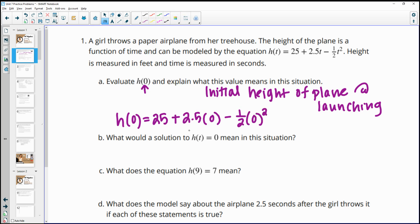And then anytime we multiply something by zero, it's zero. So these two pieces are going to be zero. So our initial height is just going to be 25.